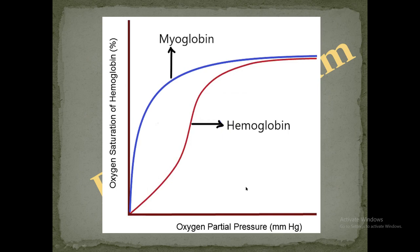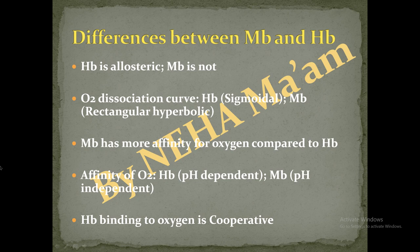Looking at the oxygen dissociation curves: hemoglobin's oxygen dissociation curve is S-shaped or sigmoidal. But in myoglobin's case, the curve is a rectangular hyperbola. These differences are very important: hemoglobin is an allosteric protein while myoglobin is not. Myoglobin has higher affinity for oxygen compared to hemoglobin. This point is very important.